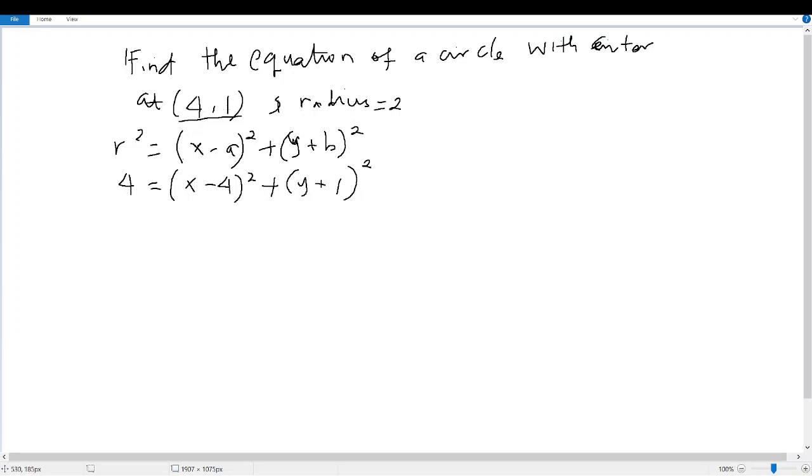When we square 2, it's going to give us 4. That's why I've written 4 equal to (x - 4)² as our a squared, then plus (y + 1)² squared.